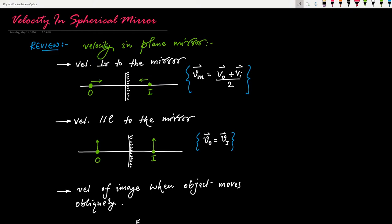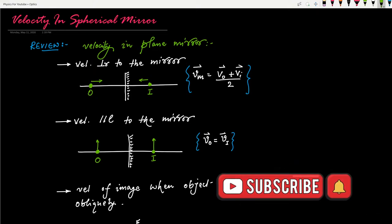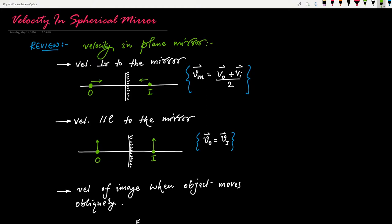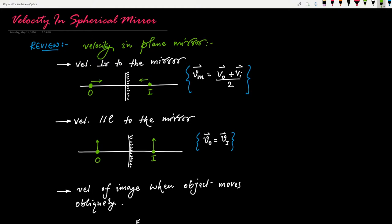Let's start our study on the concept of velocity in a spherical mirror. But before that, I need to tell you that the concept I'll be using in finding the velocity in spherical mirror is the same as the concept I used while finding velocity of the image formed in a plane mirror. If you haven't checked that video, you can check it by going to my playlist on ray optics — part three. I'll link it in the upper right corner or you can check the link in the description below.